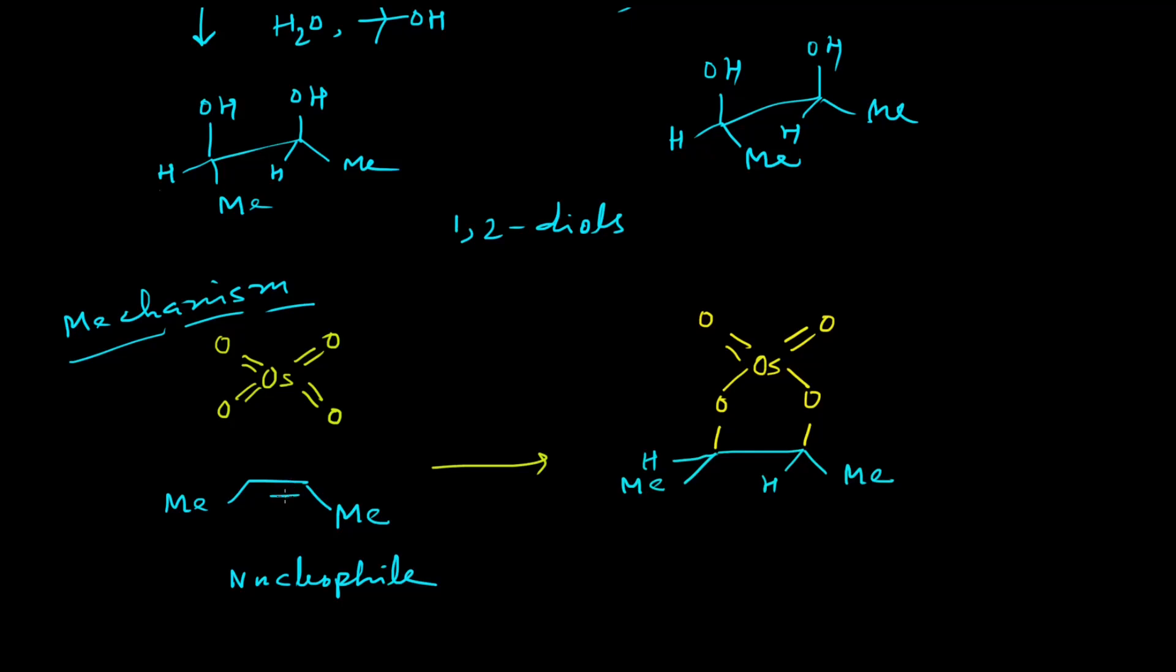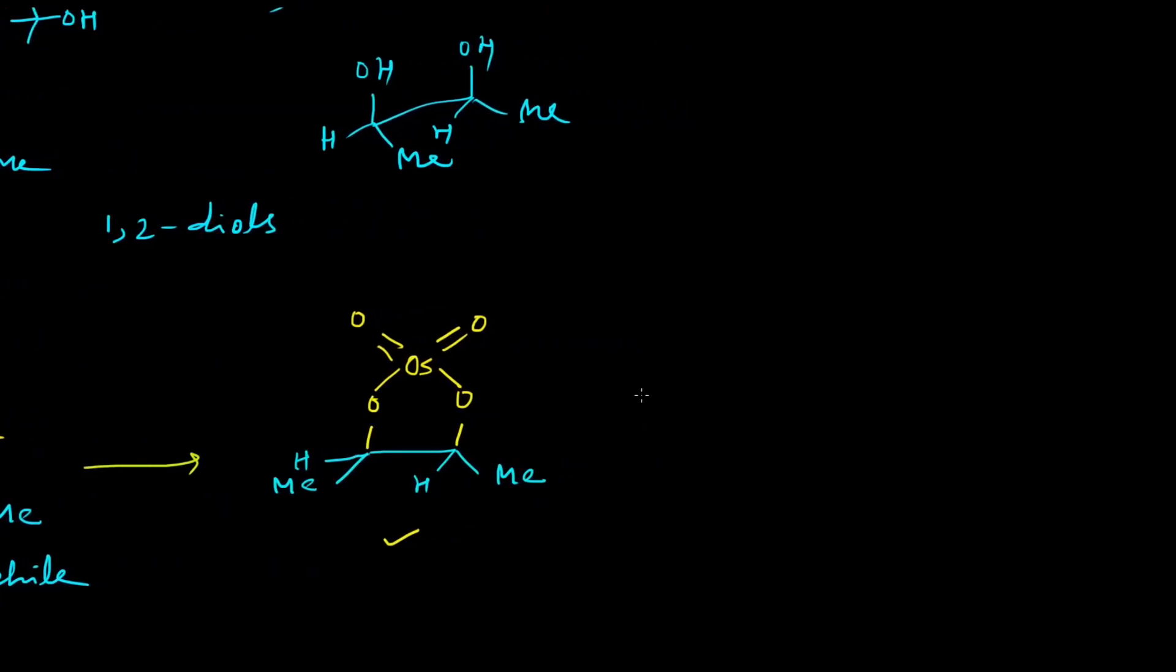How will the ester form? We can draw a reasonable curve arrow notation for this step, which is the initial nucleophilic attack by this double bond to this oxygen. Then this osmium-oxygen bond will break and another oxygen will form a carbon-oxygen single bond, and thereby this osmate ester will form.